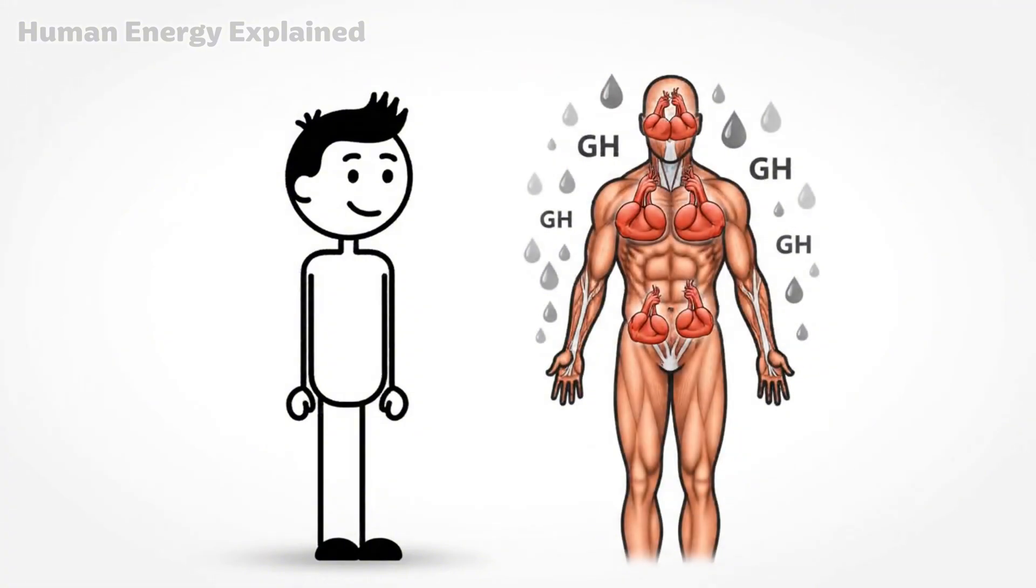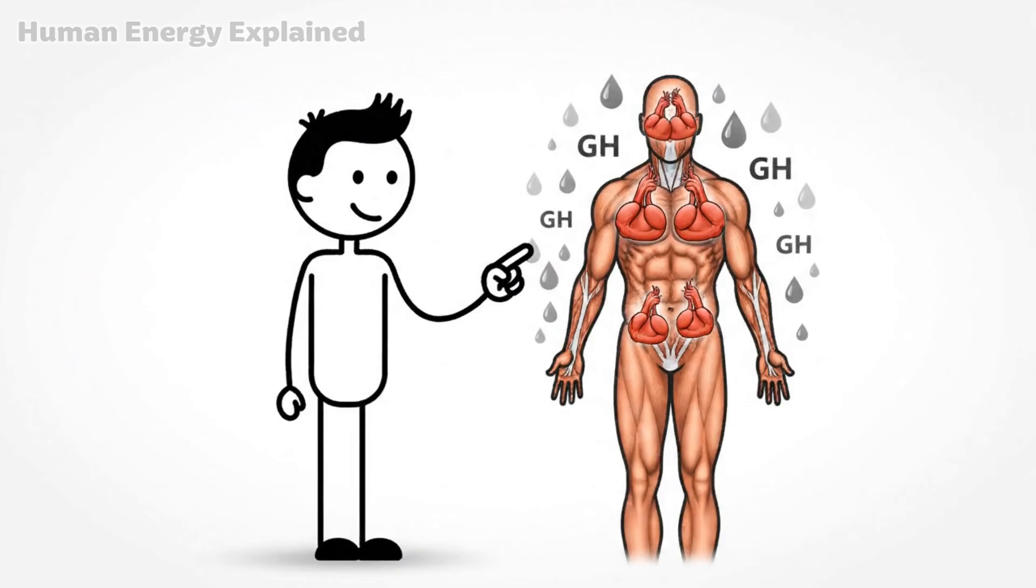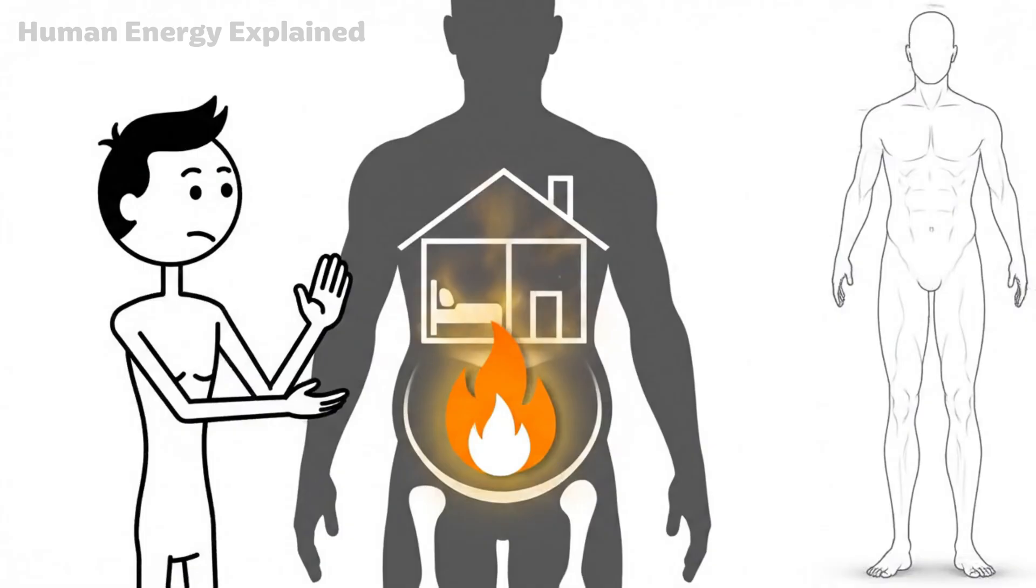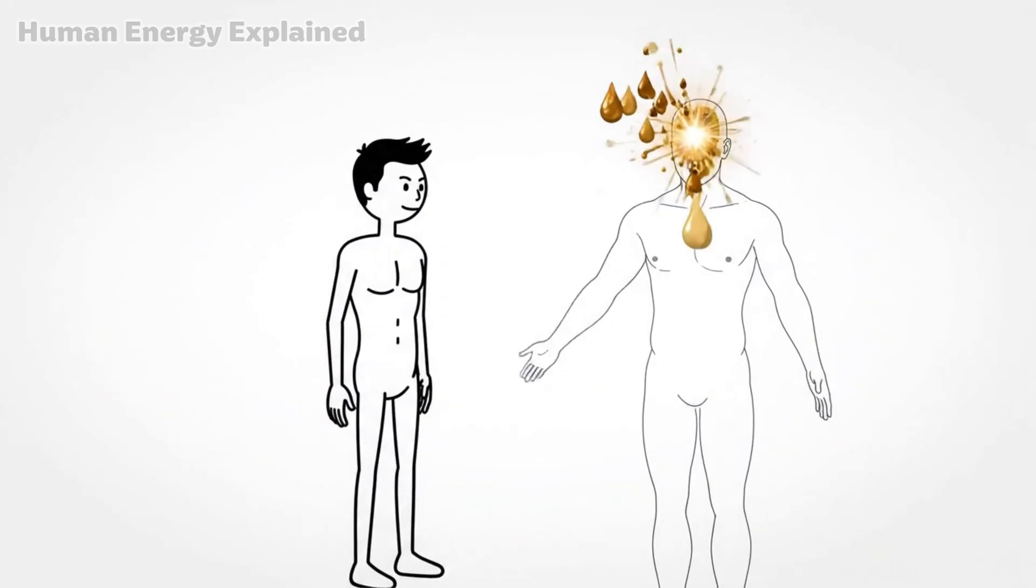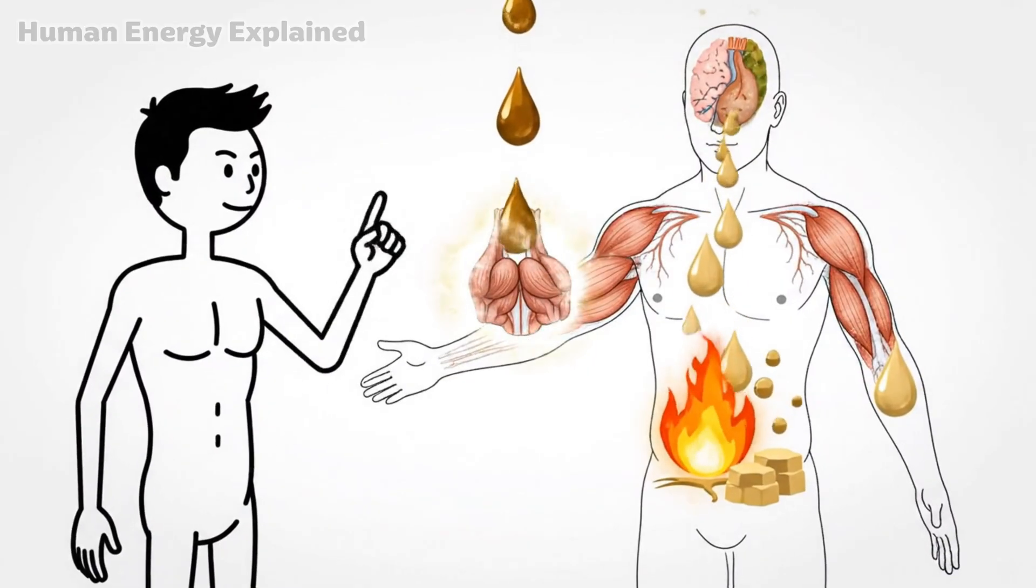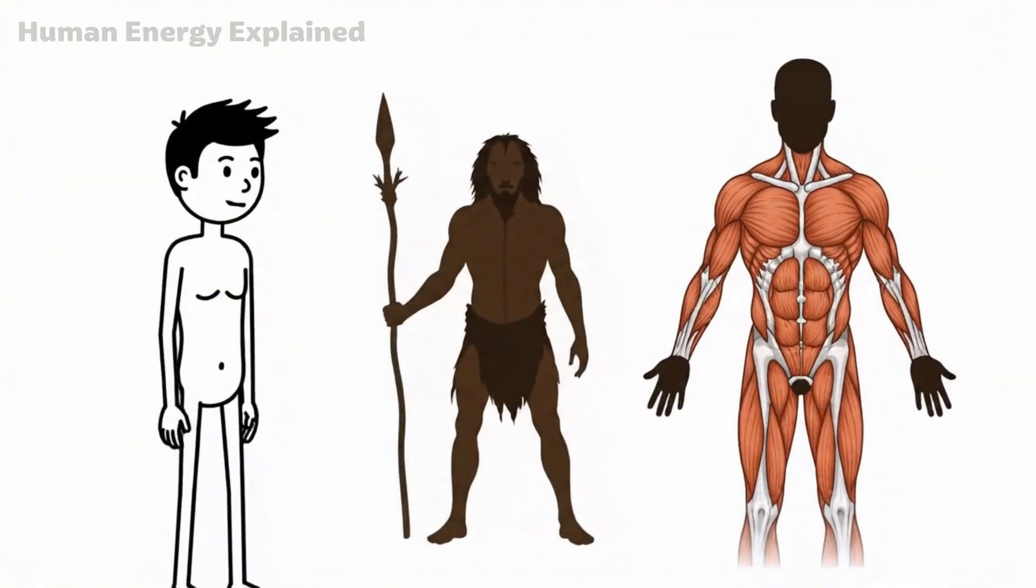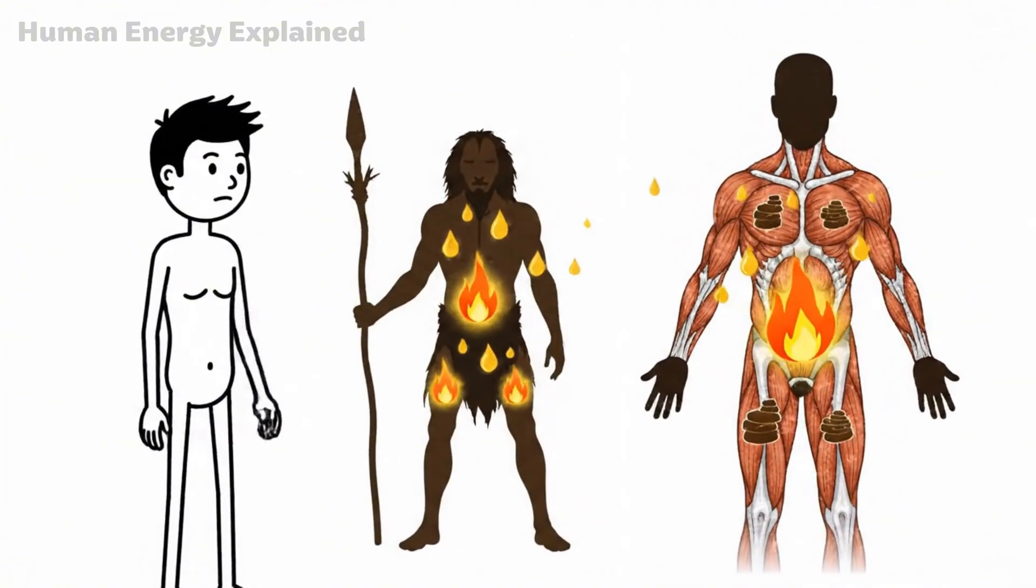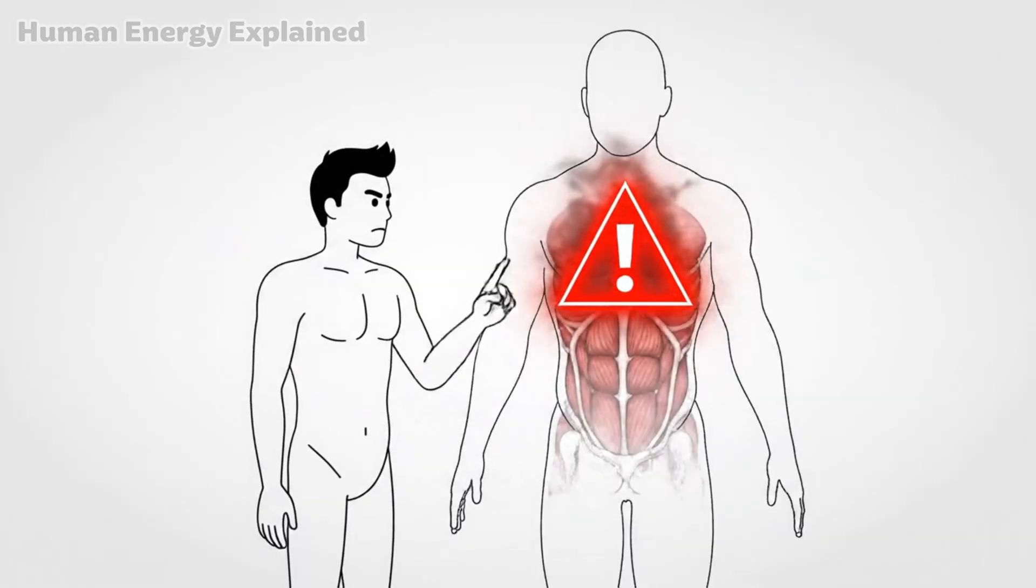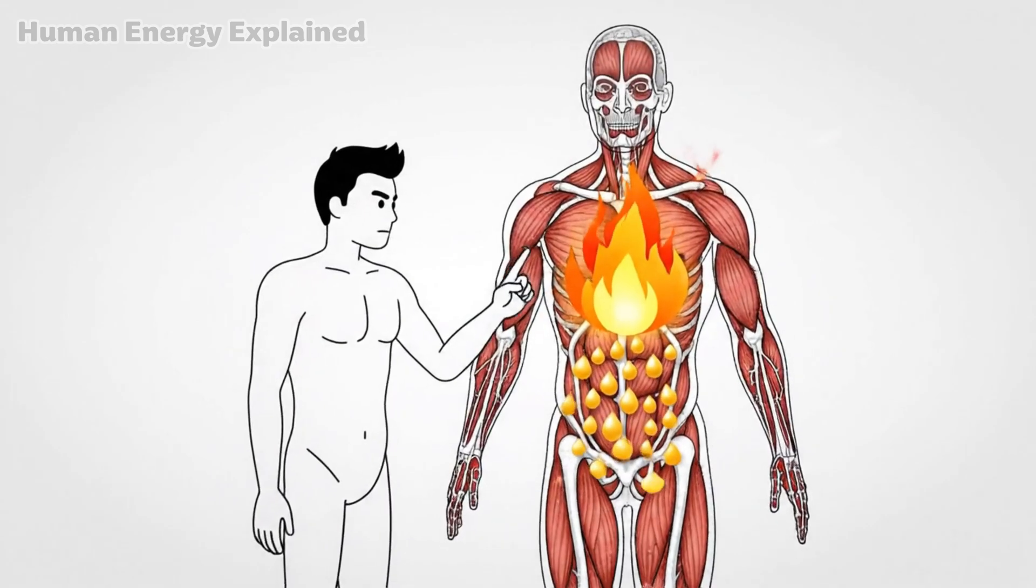This is why the fear of losing muscle during fasting is largely a myth. Your body isn't stupid. It doesn't burn down the house to heat one room. Growth hormone surges specifically to protect your muscle, while directing energy demands towards stored fat. Evolution built this system because our ancestors needed strength to hunt even when food was scarce. Burning muscle during a food shortage would have been a death sentence. So the body developed a brilliant workaround.